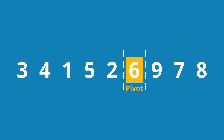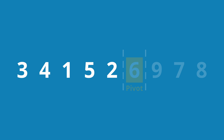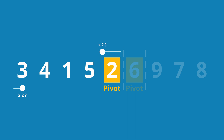We continue with the left section. First, as always, we determine the pivot element. According to our pivot strategy, we choose the last element of the partition, the 2. We look from the left for the first element greater than or equal to 2, which is the first one, the 3. And from the right for the first element less than 2, which is the 1.